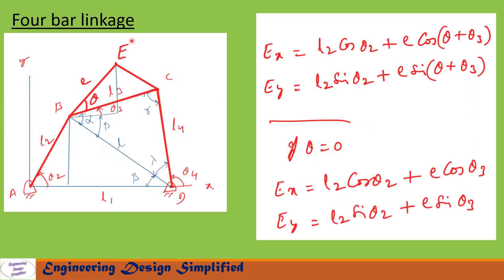First, let us write the equation for the X position of point E: EX = L2 cos(theta2) + E cos(theta + theta3). Similarly, the Y position equation is: EY = L2 sin(theta2) + E sin(theta + theta3). If the angle between BE and BC is theta, these are the equations to find EX and EY.